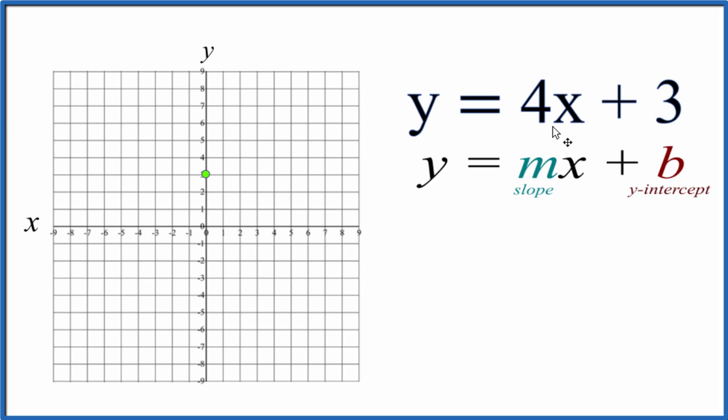Then we have a slope of 4. Let's call that 4 over 1. Do rise over run. So we go to our y-intercept. We go up 1, 2, 3, 4, and over 1. We're kind of out of graph paper.